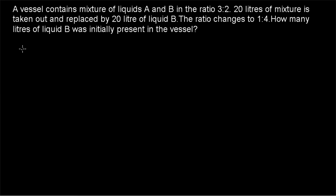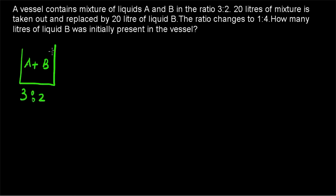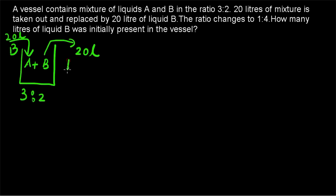We are having a vessel with a mixture of A and B, and the ratio of A to B is given as 3 is to 2. Then 20 liters of this mixture is taken out and replaced by 20 liters of B, so 20 liters of the A plus B mixture is taken out. The ratio will change to 1 is to 4. How many liters of liquid B was initially present in the vessel?